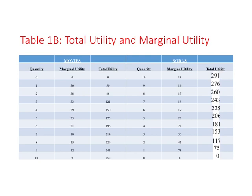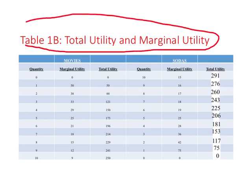We are trying to understand consumer theory. In the previous video, I explained consumer preferences and we assumed that a person can measure utility in precise terms — what we call cardinal utility. We then looked at marginal and total utility, the relationship between the two, and the law of diminishing marginal utility. Here is a copy of the table from my previous video, which outlines this person's preferences in terms of cardinal utility from watching movies and drinking sodas. Let us use this table to look at actual consumption choices.